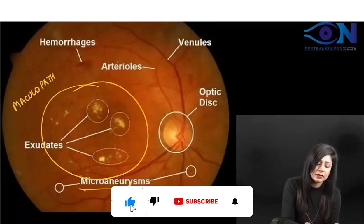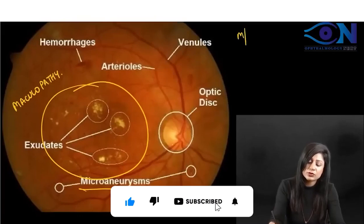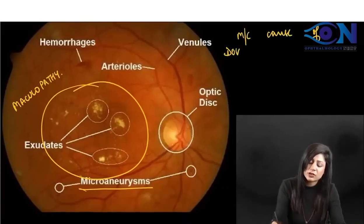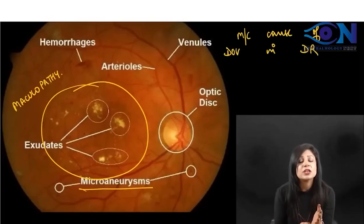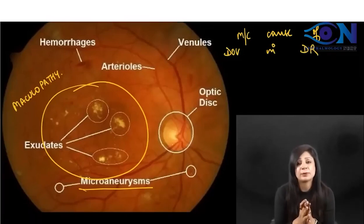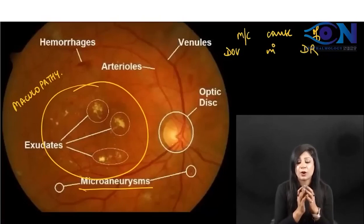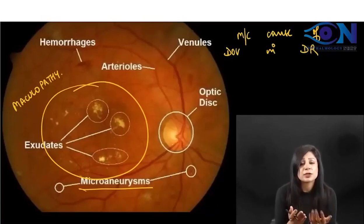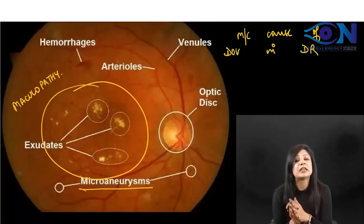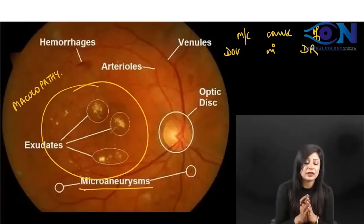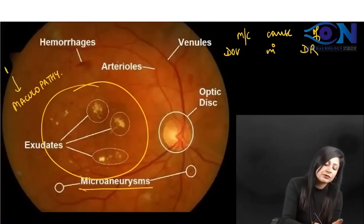Maculopathy is the most common cause of diminution of vision in patients with diabetic retinopathy. There is a common misconception that maculopathy will take place only after PDR — but that is not correct. Maculopathy can take place after NPDR as well as after PDR.